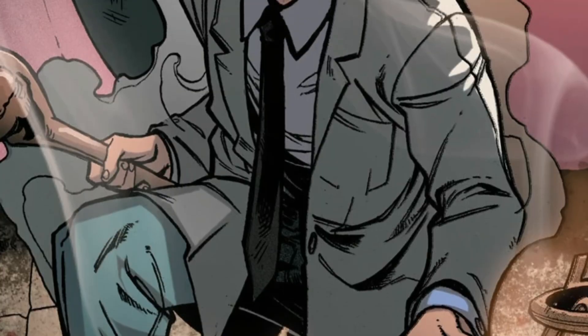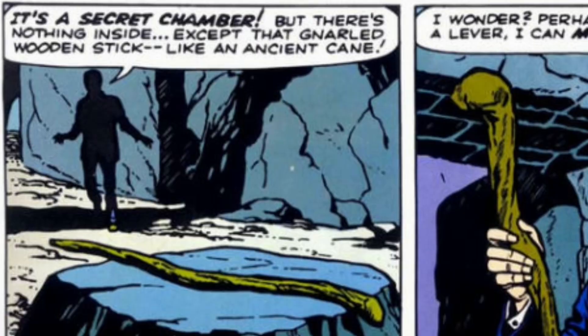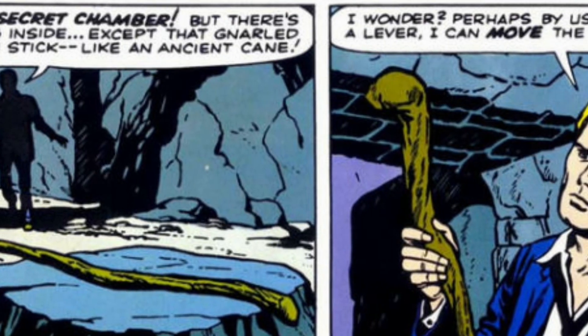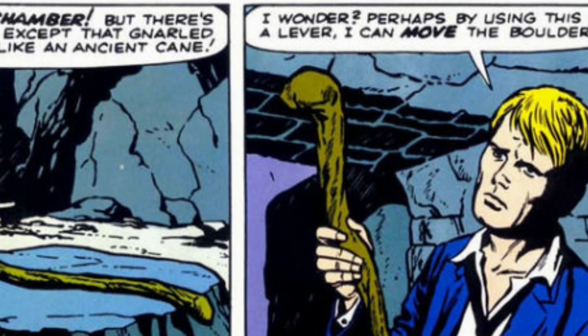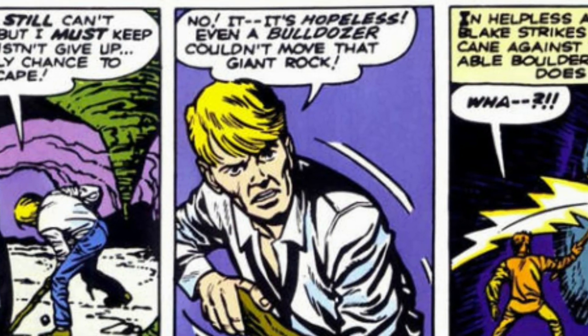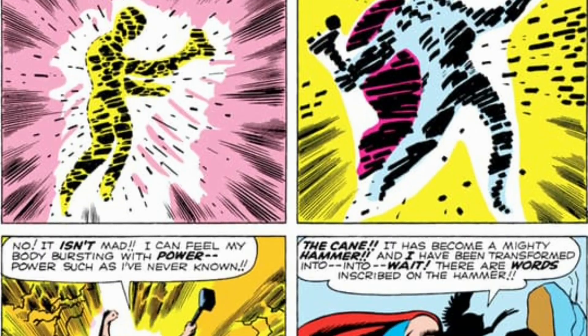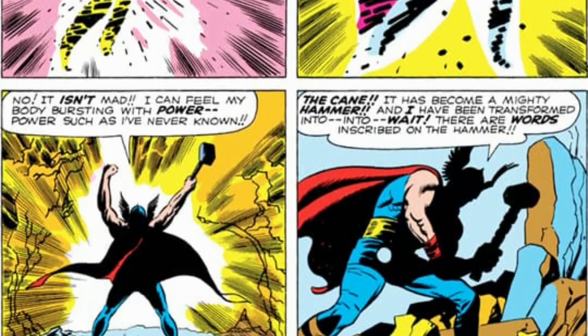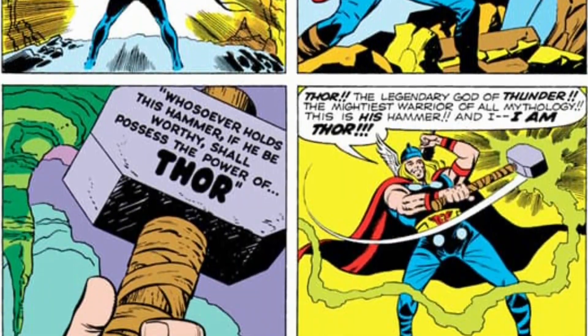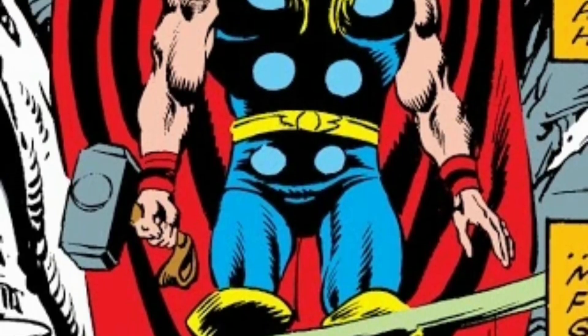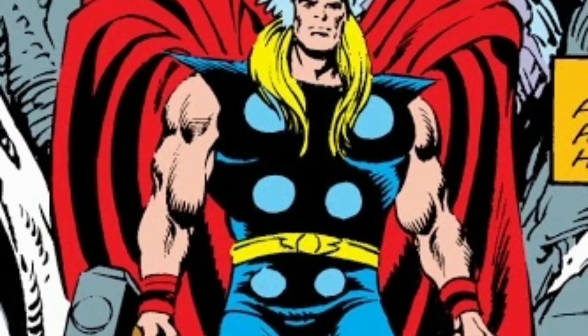When Earth was being threatened, Odin compelled Donald to go to Norway, where he encountered hostile aliens, so Donald fled into a cave where he found an old walking cane, which he attempted to use to escape. But when he struck the cane onto a rock, it turned into Mjolnir, and it transformed Donald back into Thor, restoring all of his memories and power.